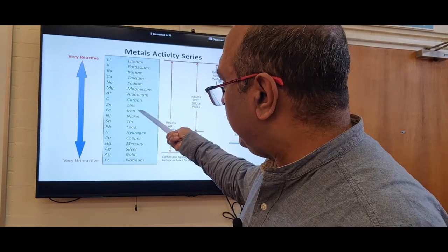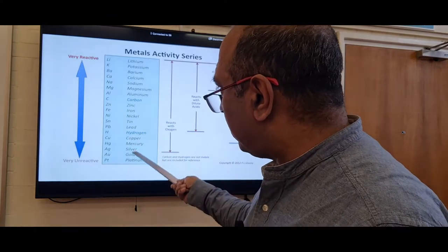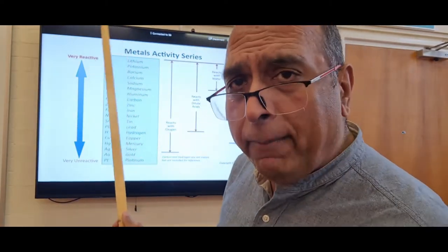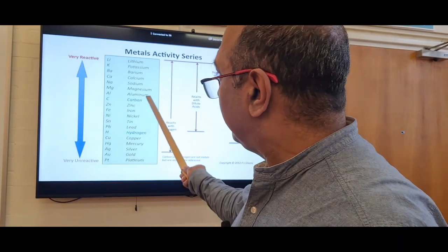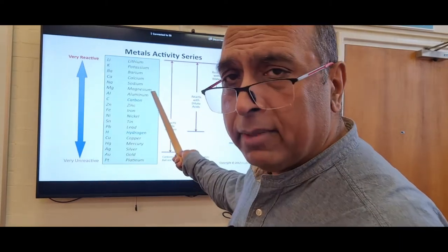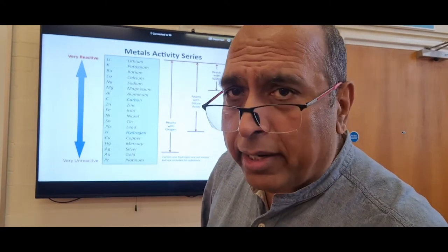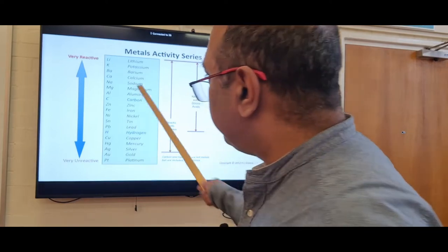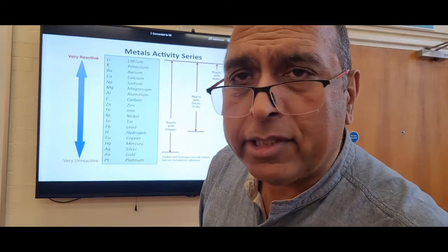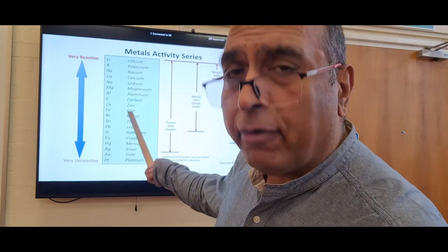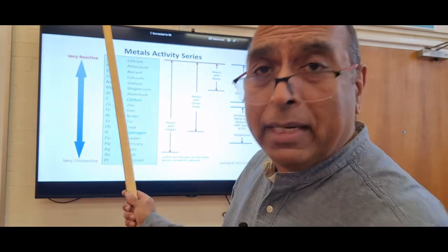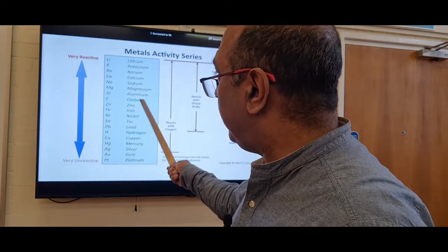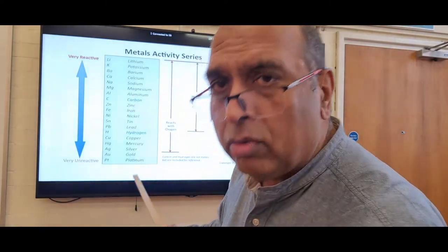If we have zinc oxide, iron oxide, nickel oxide, tin oxide, lead oxide, copper oxide, mercury oxide, silver oxide, gold oxide, or platinum oxide, heating with carbon will work — carbon is more reactive and will take the oxygen away, making the metal. However, carbon is less reactive than aluminium, so heating aluminium oxide with carbon gives no reaction. You cannot use carbon to get aluminium from aluminium oxide — only metals below carbon in the reactivity series can be extracted this way.